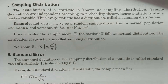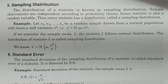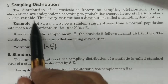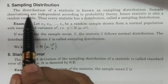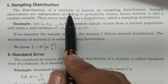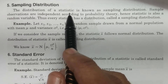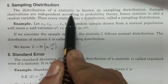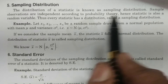The term sampling distribution itself speaks clearly — it is the distribution due to consideration of a sample. Sampling is nothing but considering a sample for some particular purpose from the population. A statistic is a function of sample observations, while a parameter refers to population constants.